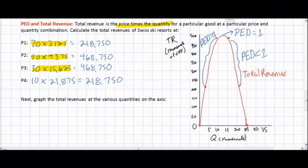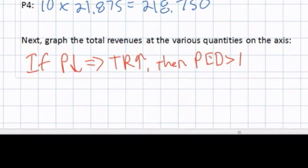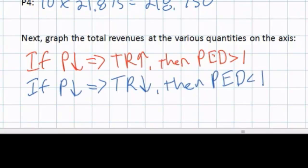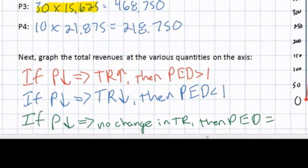The total revenue test of price elasticity of demand can be summarized as follows: If a decrease in price leads to an increase in total revenue, then PED must be greater than one and demand must be elastic. If a decrease in price leads to a decrease in total revenue, then PED must be less than one and demand must be inelastic. Finally, if a decrease in price leads to no change in total revenue, then PED must equal one — indicating unit elasticity — and the total revenue test can be used to determine elasticity without calculating PED coefficients directly.